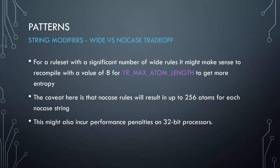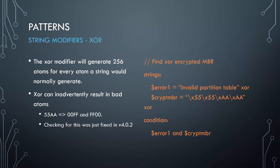This might also incur performance penalties on a 32-bit processor, particularly ARM processors, because it won't necessarily have a 64-bit compare ready to go. XOR is another interesting modifier — by design it generates 256 atoms for every string it's applied to.